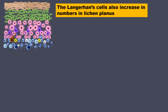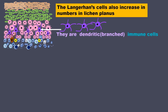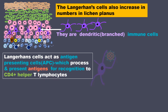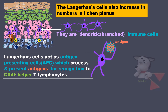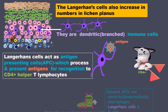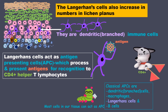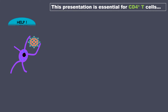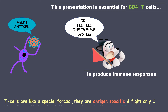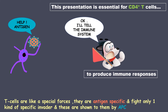The Langerhans cells also increase in number in lichen planus. They are dendritic, i.e., branched immune cells. Langerhans cells act as antigen presenting cells which process and present antigens for recognition to CD4 positive helper T lymphocytes. This presentation is essential for CD4 positive T cells to produce immune responses. T cells are like special forces — they are antigen specific and fight only one kind of specific invader, as shown to them by the antigen presenting cells.